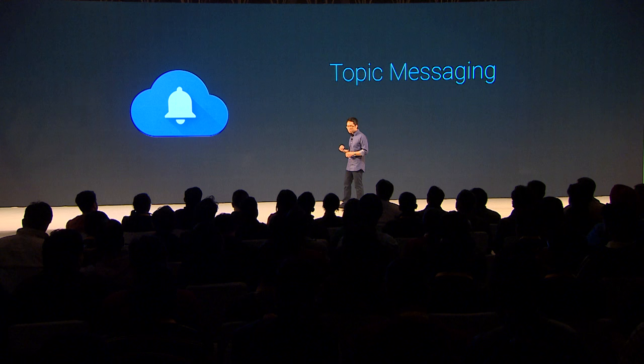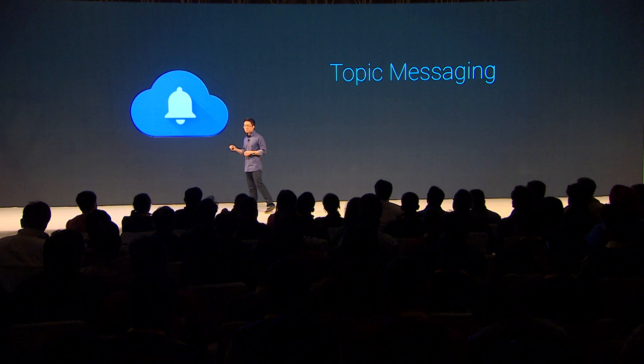We've introduced a feature called Topic Messaging, which lets you subscribe multiple devices to a specific topic and send a message targeting those devices specifically. For example, if you're building a news app, you can send a notification only to users interested in sports and not in finance. Google handles the fanout and scaling for you. Using Google Cloud Messaging is free, and starting today with Topic Messaging, we've also made this unlimited.